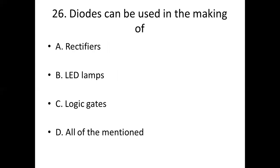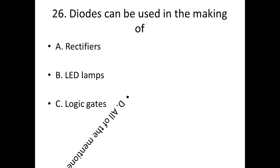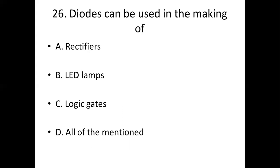Twenty-sixth one. Diodes can be used in the making of dash. Option A: rectifiers. Option B: LED lamps. Option C: logic gates. Option D: all of the mentioned. Answer: Option D, all of the mentioned.